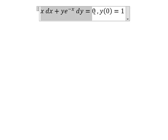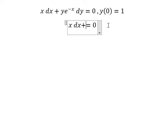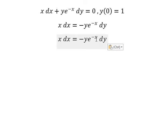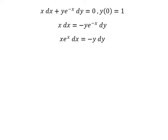I will move this term to the right, giving it a negative sign. Then we multiply both sides by e to the power of s. Next, I will put the integration on both sides.